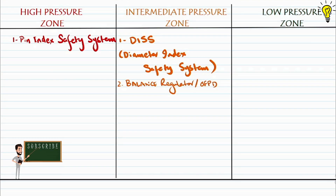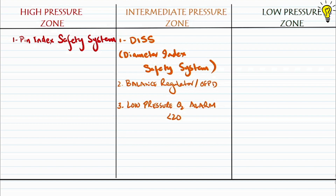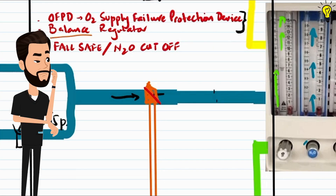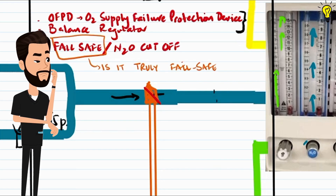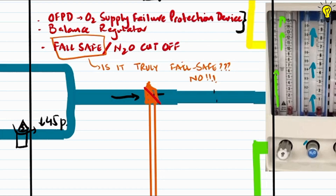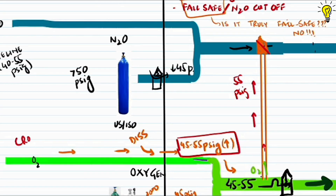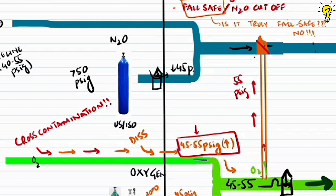Adding to the safety features of the intermediate zone beyond the fail-safe or balance regulator, the third safety feature is the low oxygen pressure alarm system, which signals when oxygen pressure falls below 20 psig. So is the fail-safe, as the name suggests, truly fail-safe? The answer is a big no — you cannot completely rely on it. What if the hospital pipeline oxygen is accidentally contaminated with other gases? The pressure would remain 55 psig and the fail-safe would stay open for nitrous oxide flow.